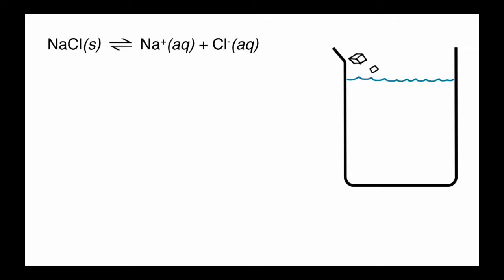Now, let's say we have a beaker of water, and we're going to add some salt into it. That salt's going to drift to the bottom, and it's going to start to dissolve. And as it dissolves, it's going to form these sodium and chloride ions in the solution.